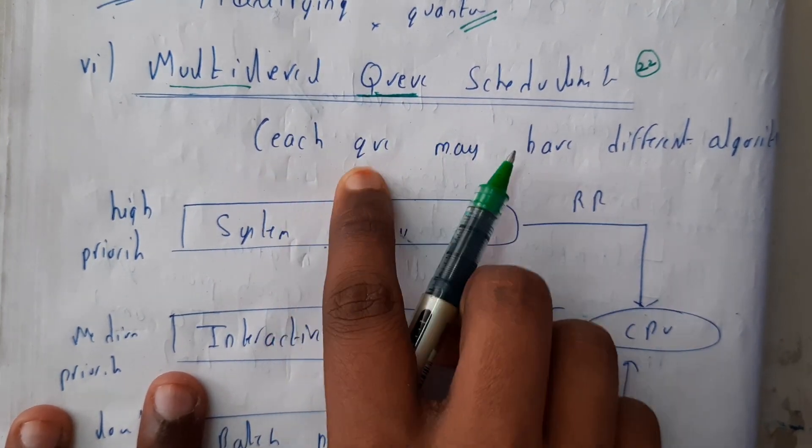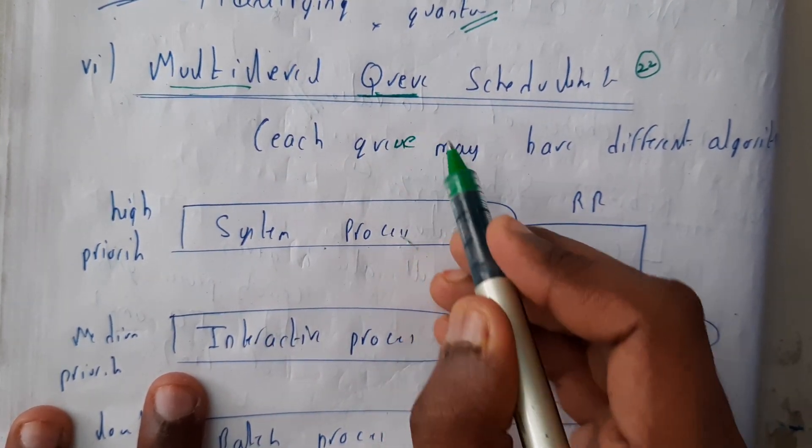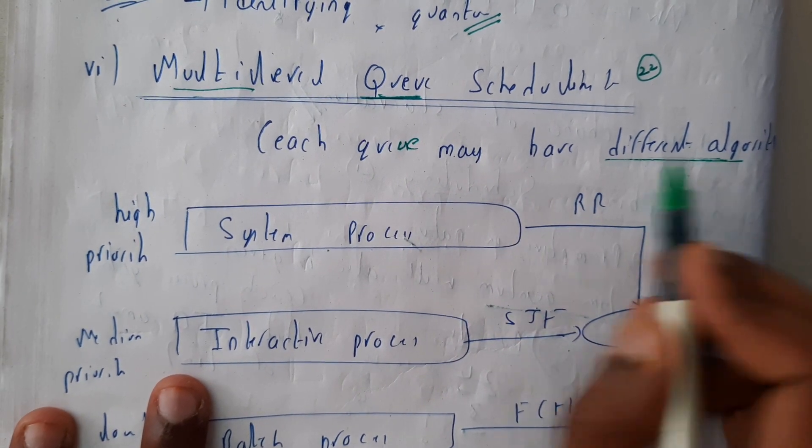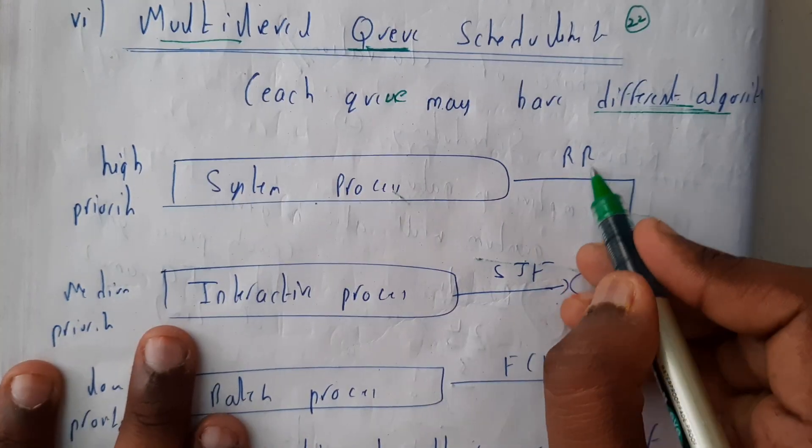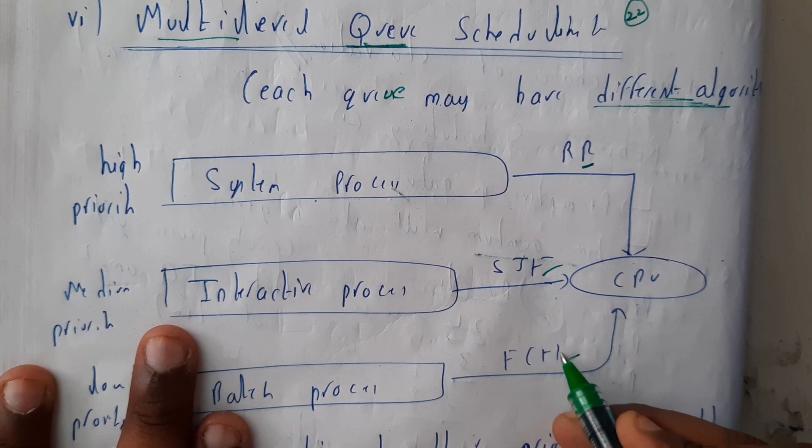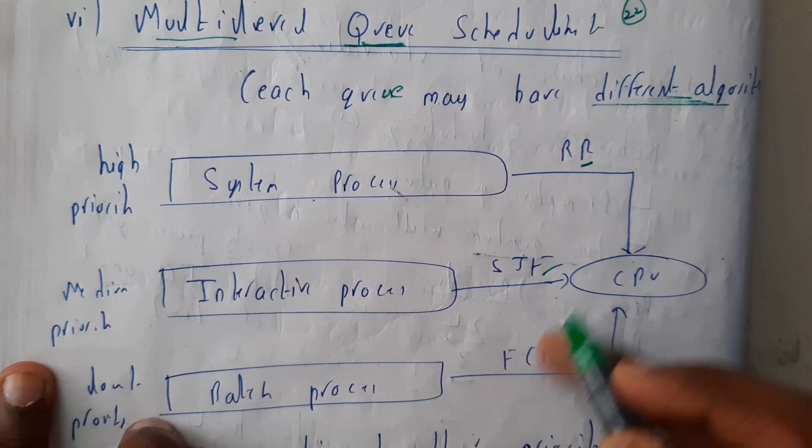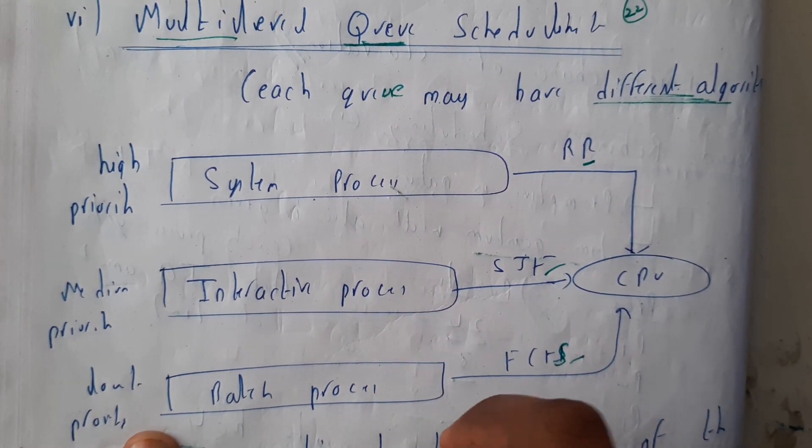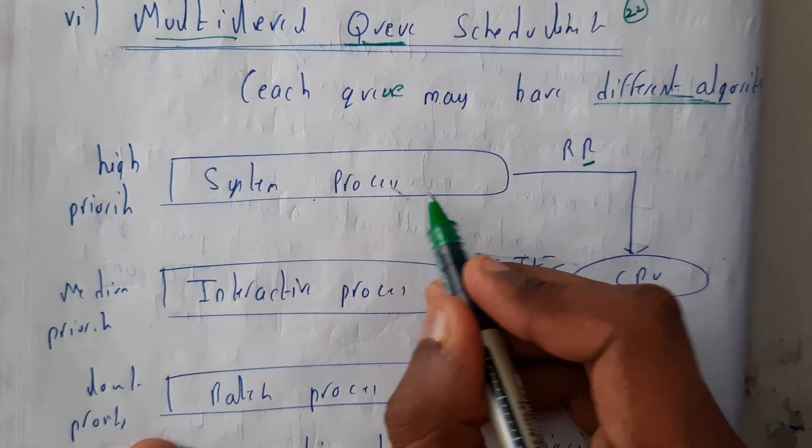Each queue may have different algorithms. So basically, previously we used to use round robin or SJF or FCFS, but here each level of queue we can give different algorithms. The high priority ones are nothing but the system processes.